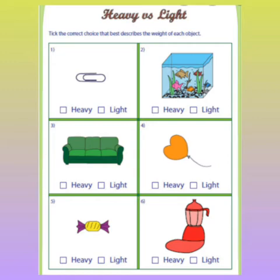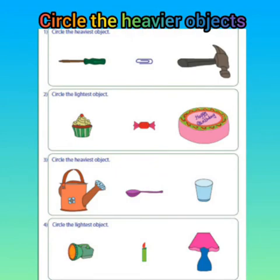Here is a bag of ice. In this worksheet, you have to circle the heaviest objects. A mixing blender is heavy. Look at these three pictures: one paper clip, one hammer — the hammer is the most heavy one, so you will circle the hammer.